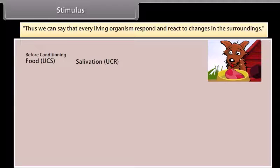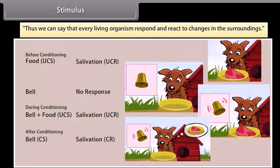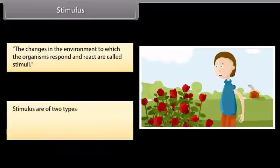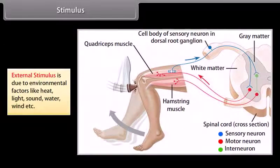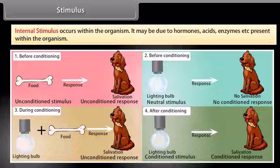Every living organism responds and reacts to changes in the surroundings. The changes in the environment to which organisms respond and react are called stimuli. Stimulus is of two types: external stimulus and internal stimulus. External stimulus is due to environmental factors like heat, light, sound, water, wind, etc. Internal stimulus occurs within the organism and may be due to hormones, acids, enzymes, etc. present within the organism.